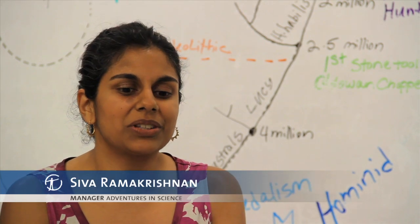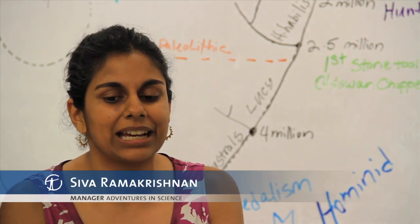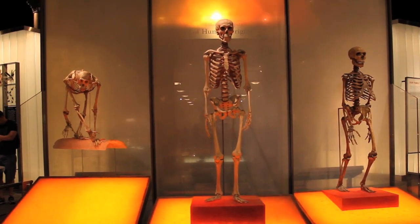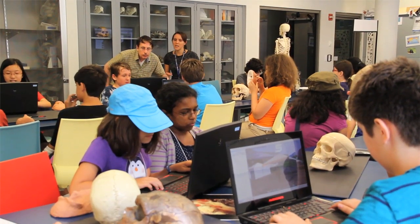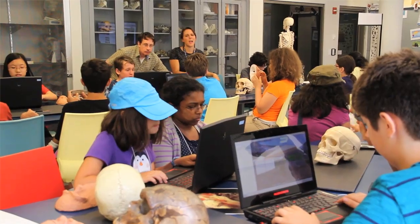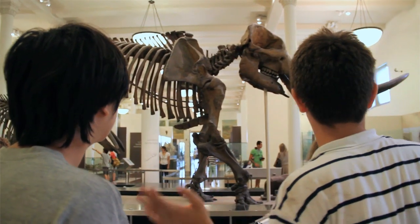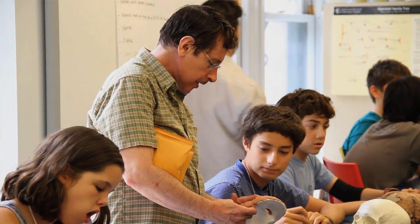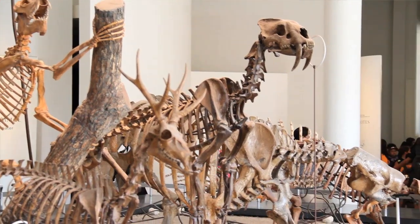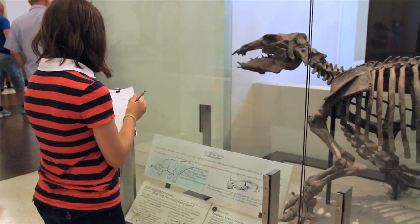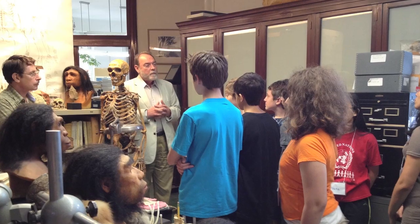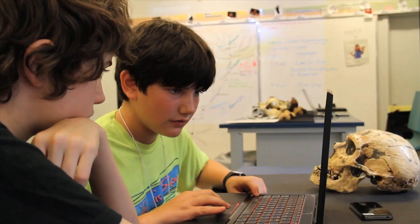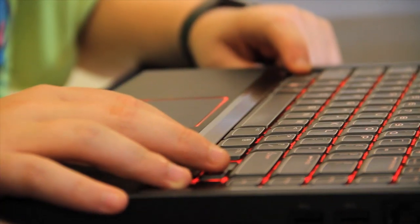"What Happened to the Neanderthals" is our latest and most exciting installment of the middle school institutes, in which middle school kids who are passionate about science and curious about the natural world can come to the Museum of Natural History and learn with each other. They work with scientists and educators, explore the fossils at the museum, get to go behind the scenes, and are really allowed to explore topics that are often not covered in schools.